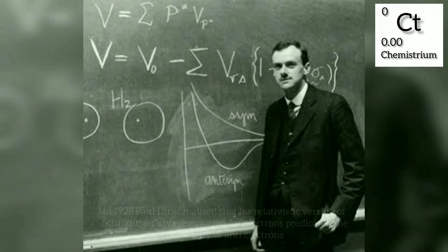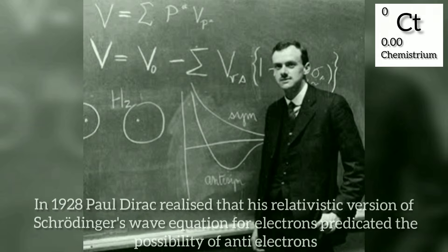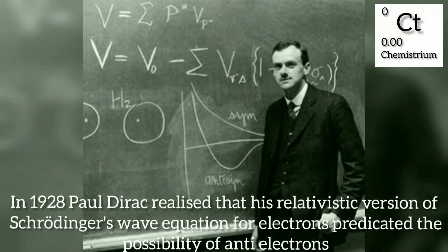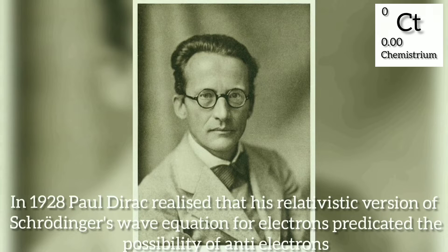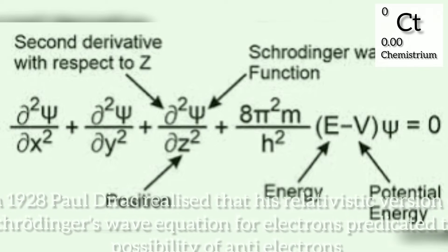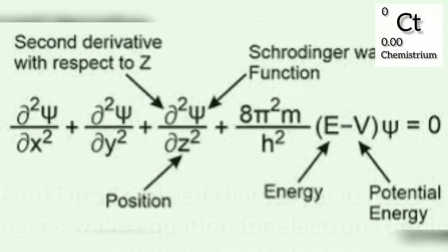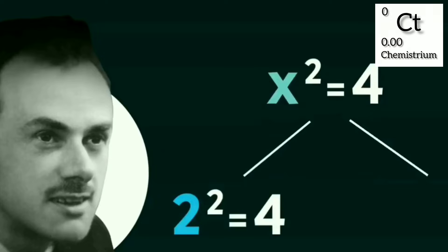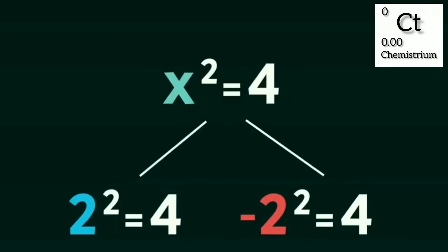In 1928, Paul Dirac realized that his relativistic version of Schrödinger's wave equation for electrons predicted the possibility of anti-electrons. Like if x-squared is equal to 4, it has two solutions: 2 and negative 2.